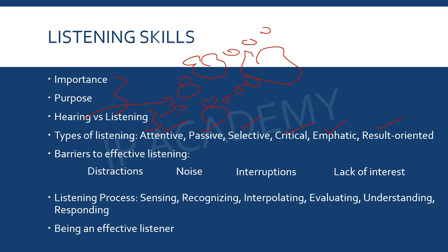Moving on to the listening process, there are different steps. First is sensing, where you perceive the sound — you've heard it but haven't understood it yet. The second step is recognizing those sounds. Then comes interpreting, where you begin to understand them. After that is evaluating, where you analyze what you've heard. Finally, once you've reviewed and analyzed, comes your response — when you have understood everything and can reply.